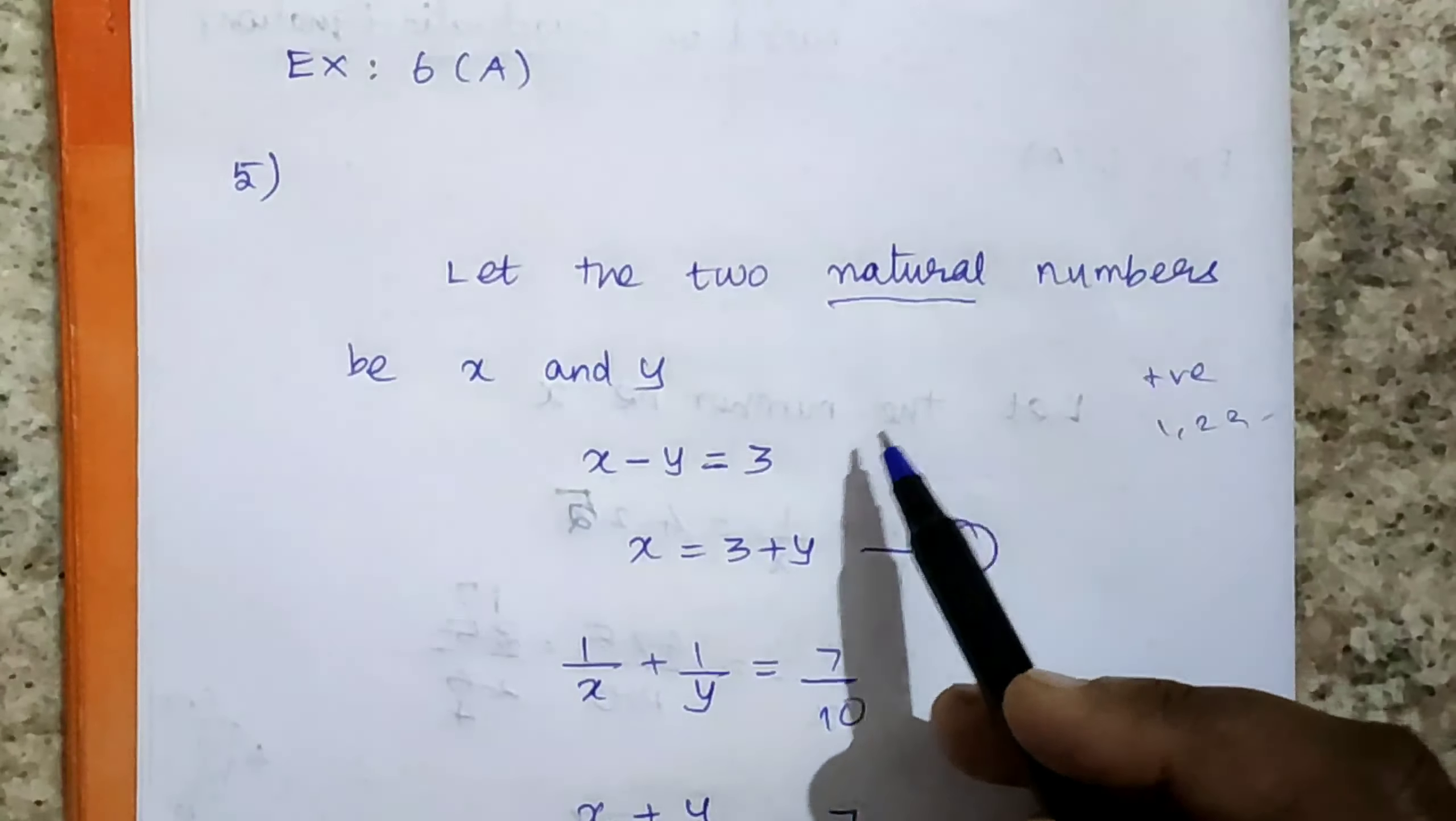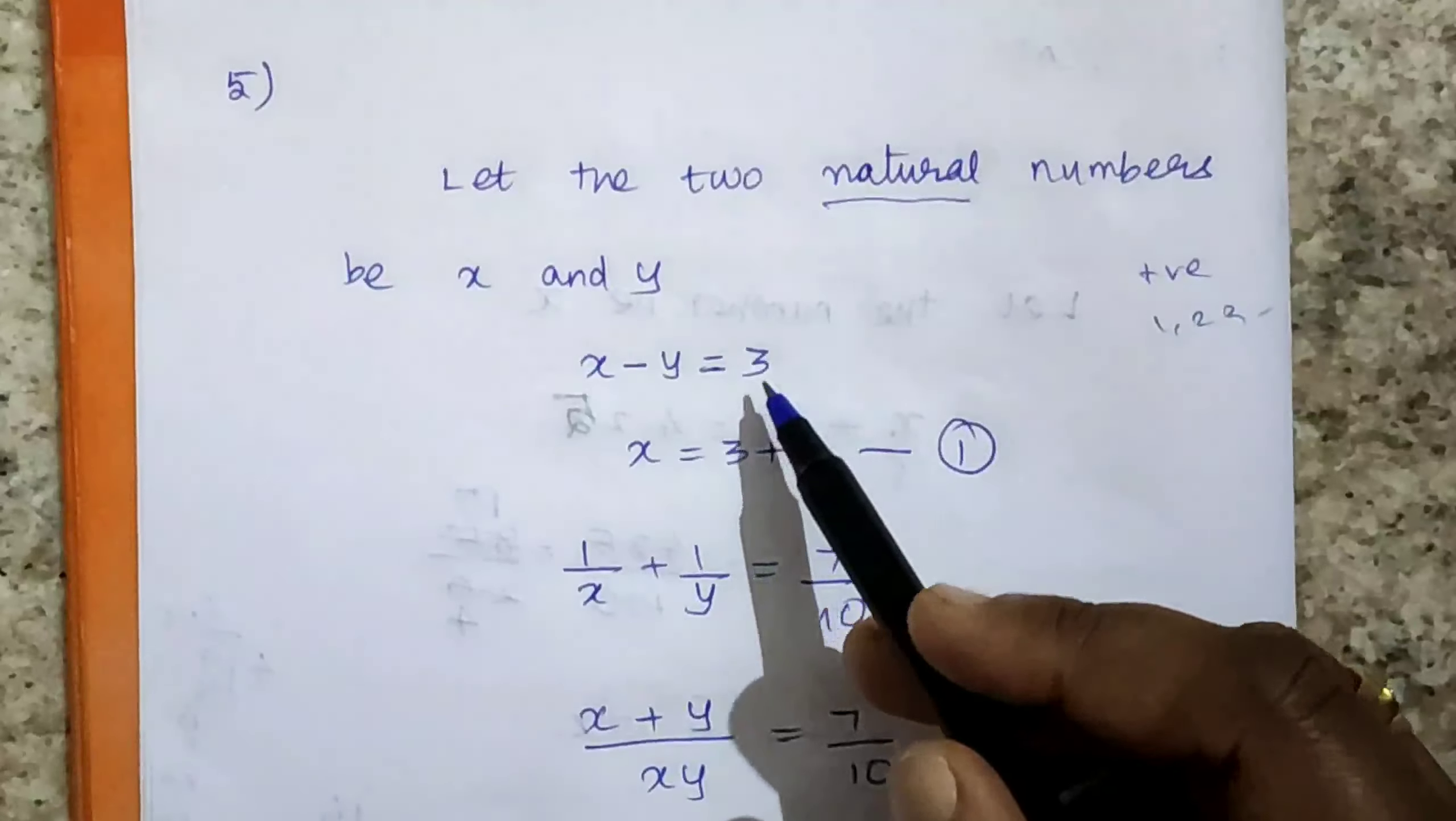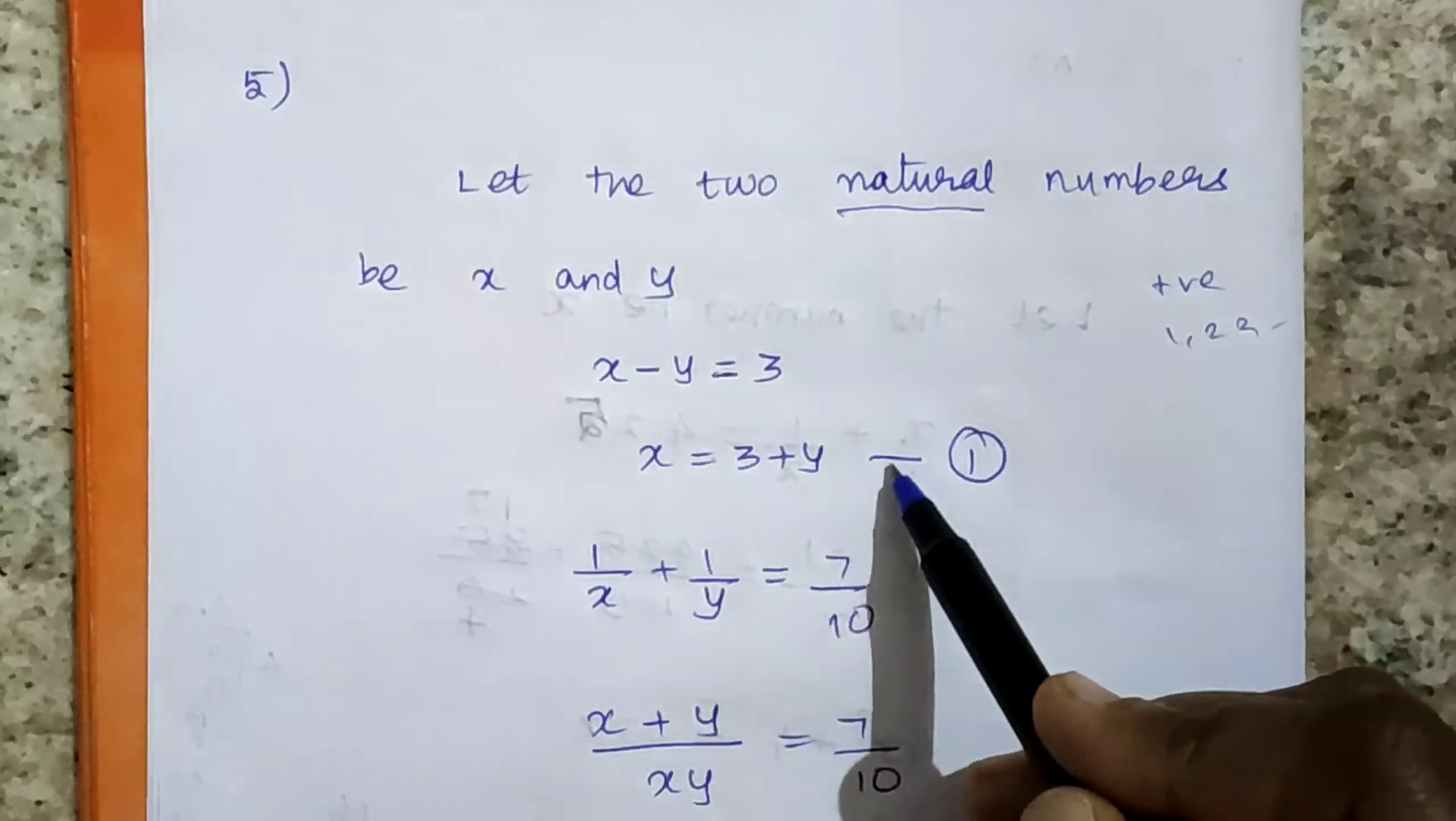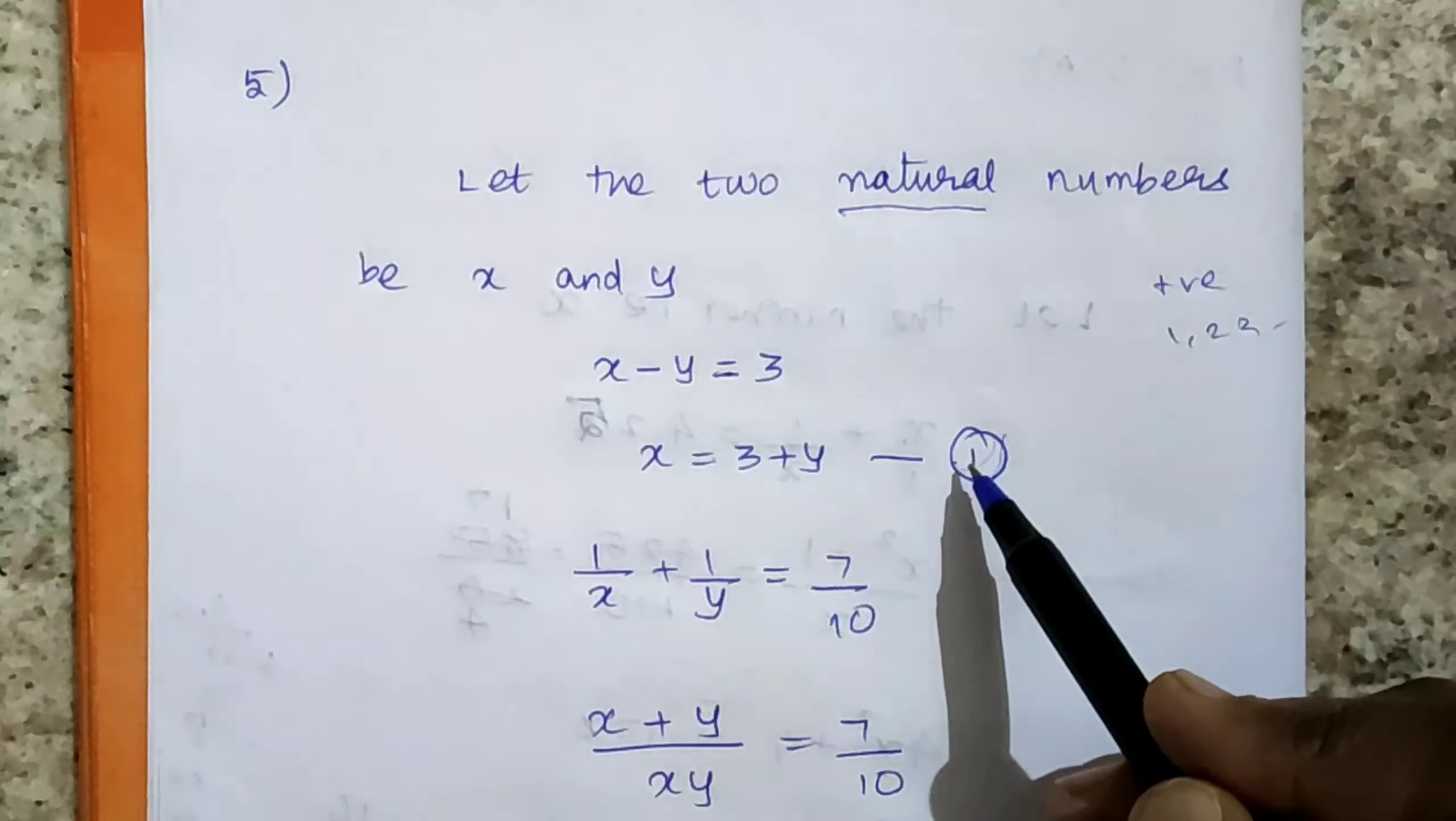For example, 8 and 5: 8 minus 5 equals 3. Next, x equals 3 plus y. You can keep this as the first equation.